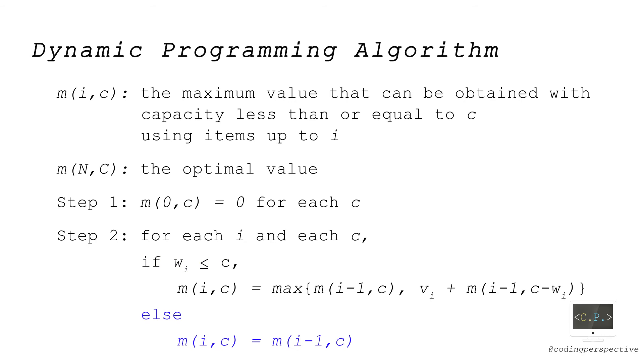Otherwise, we cannot include it so that m(i,c) is equal to m(i-1,c). Hence we can compute m(i,c) in this way for any item i and capacity c.